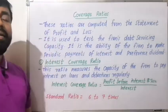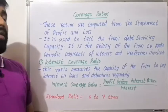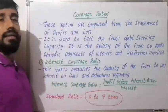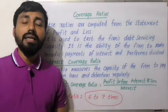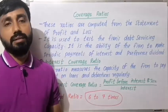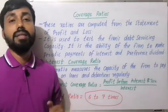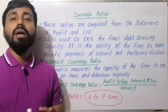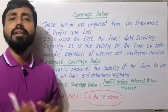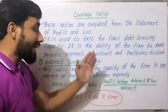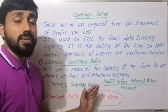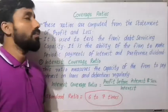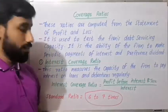The standard interest coverage ratio is 6 to 7 times. Coverage ratios are expressed in times — for example, proportional, percentage, or times. The standard ratio is referred to as 6 to 7 times.